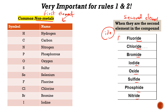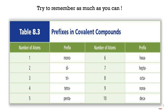So remember: this is fluoride, chloride, bromide, iodide, oxide, sulfide, phosphide, and nitride. These are the IDE forms of the common non-metals. You need to remember them. This table shows how we write the number of atoms in the name.